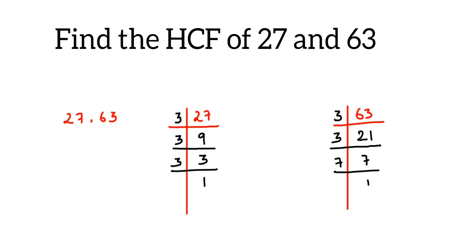So from here, 27 can be written as, write on all these factors here, 3 into 3 into 3. And 63 can be written as, write on all these factors, so 3 into 3 into 7.